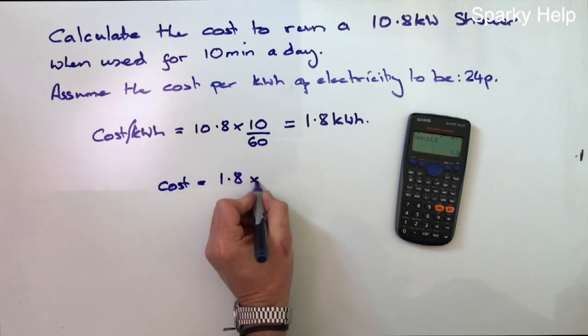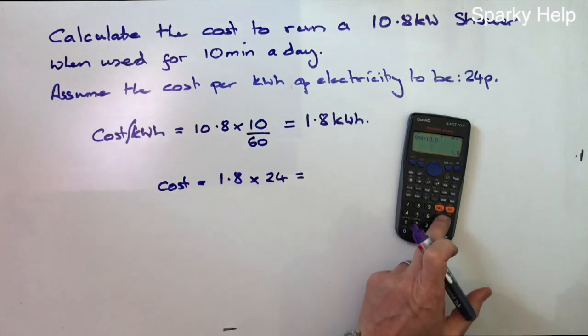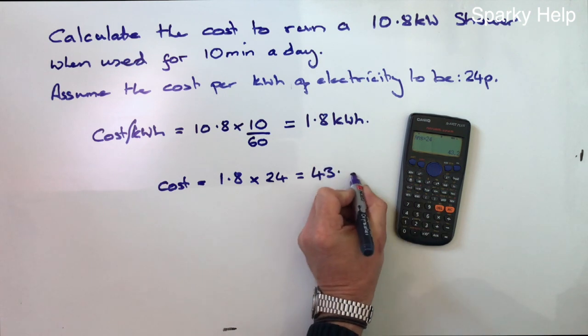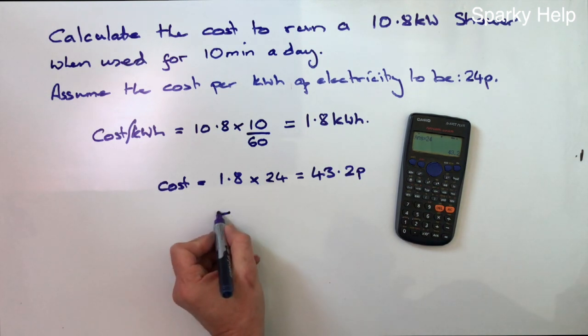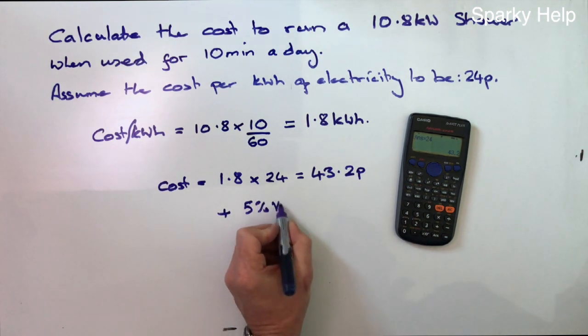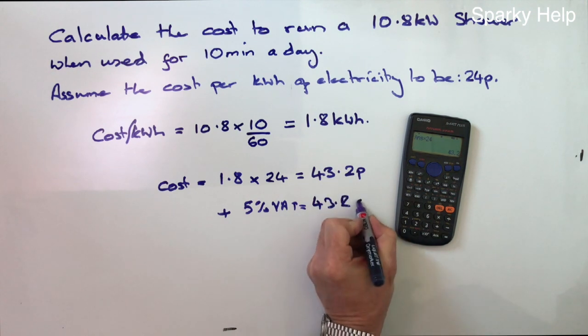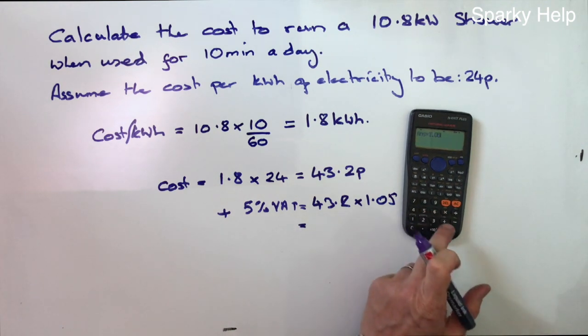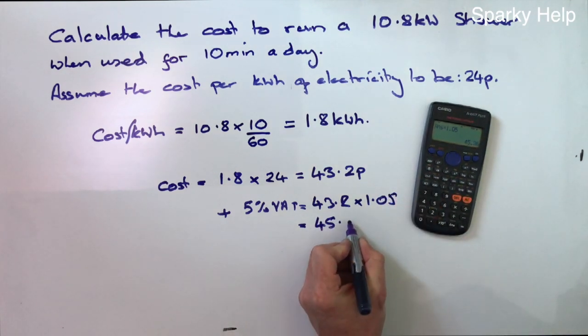1.8 times 24. So 43.2 pence. But this is excluding VAT. So if we add 5% VAT, times it by 1.05. So 43.2 times 1.05. So it's actually 45.36 pence per day.